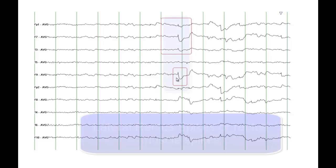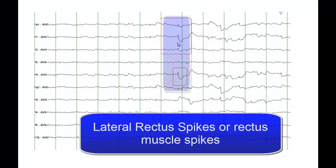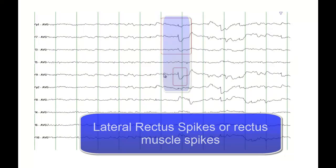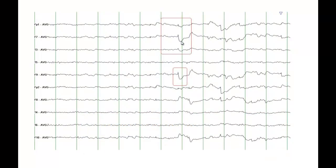These sharp waves or spike-like activity are actually lateral rectus spikes or rectus muscle spikes. This artifact is created from saccadic eye movement, and the sharp discharge that precedes it is called a rectus muscle spike. It is also called a pre-saccadic spike potential. It is physiological, it is normal, and it has nothing to do with epilepsy.